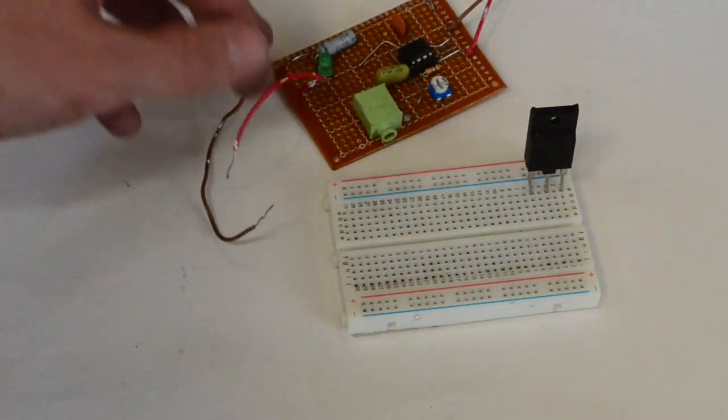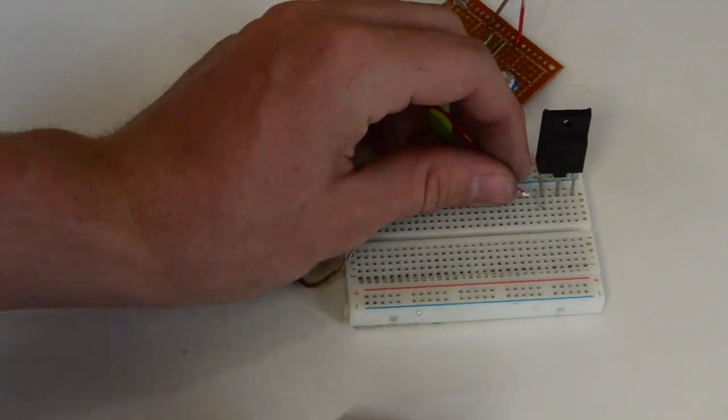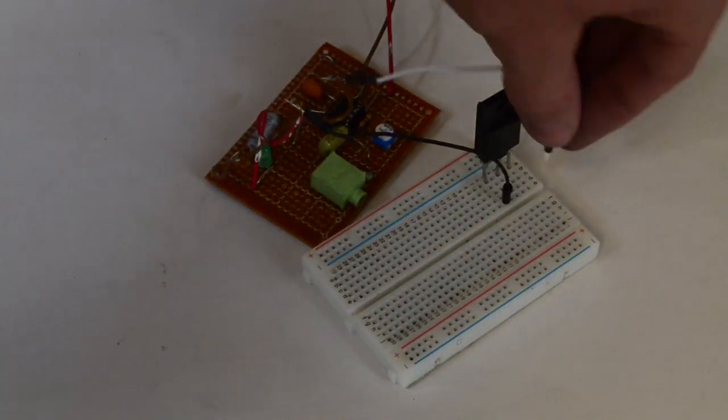So with that, I'm going to take this positive wire of my frequency generator and connect it right up here to the base of the transistor. And I'm also going to take the ground from my frequency generator and connect it over here to the emitter.